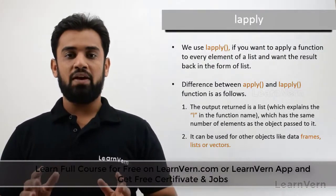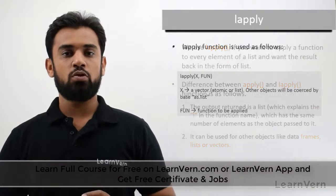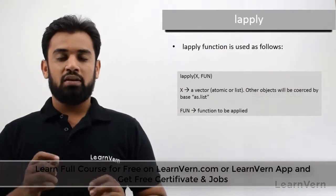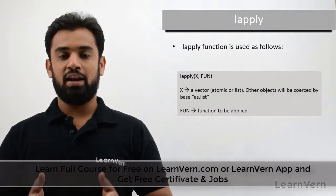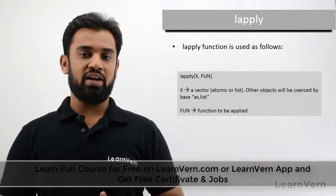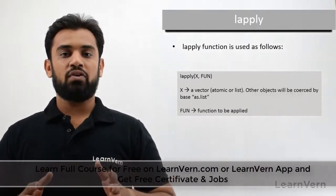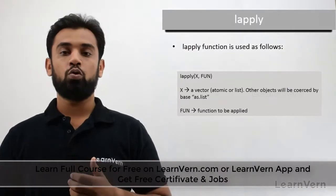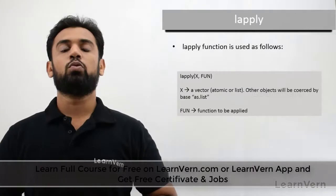lapply is an important function in the apply family. Its structure is very similar to apply — you have X and a function. The margin parameter used in apply has been removed. X is similarly an array of data, and the function can be user-defined or predefined in R. When you apply lapply over different columns of an array, it will coerce into a matrix, apply the function, and return the data in the form of a list.